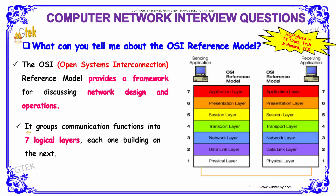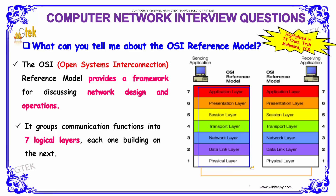It has 7 logical layers, each one building on to the next. Those layers include the physical layer, data link layer, network layer, transport layer, session layer, presentation layer, and application layer. Two nodes which are connected will have these layers to be traversed in order for an application to be processed through the web.